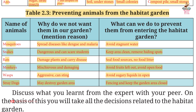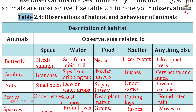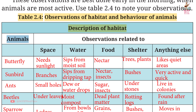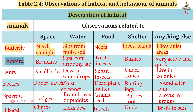Table 2.4, Page 34 — Observations of habitat and behaviour of animals. Butterfly: needs sunlight, sips water from moist soil, eats nectar, shelters in trees and plants, lives in colonies. Sunbird: found on branches, sips from dripping tap, eats nectar and insects, shelters in bushes, very active and quick.